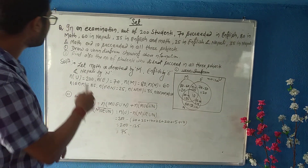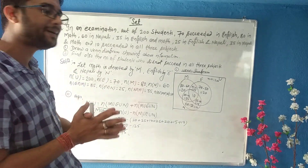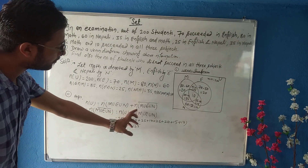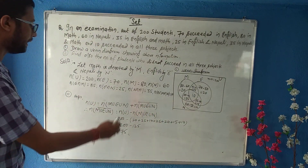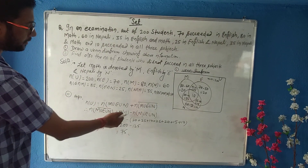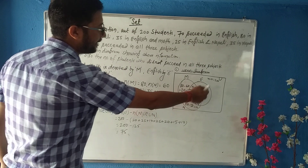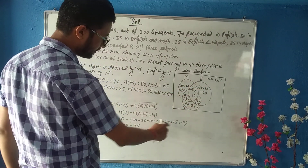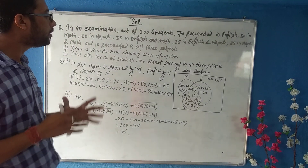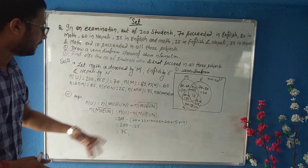Next, find the number of students who did not succeed in all three subjects — meaning we find the complement. The formula is: n(U) = n(E∪M∪N) + n(E∪M∪N)'. So n(E∪M∪N)' = n(U) minus n(E∪M∪N). n(U) = 200, and n(E∪M∪N) is the sum of all values inside the circles. Adding all regions gives 125, so 200 minus 125 = 75 students did not succeed in all three subjects.